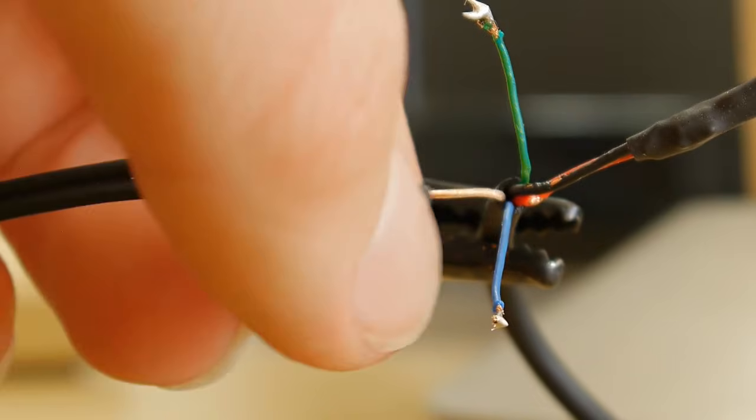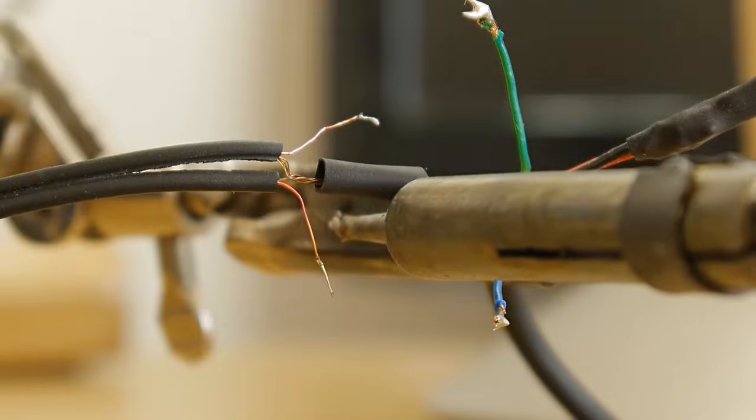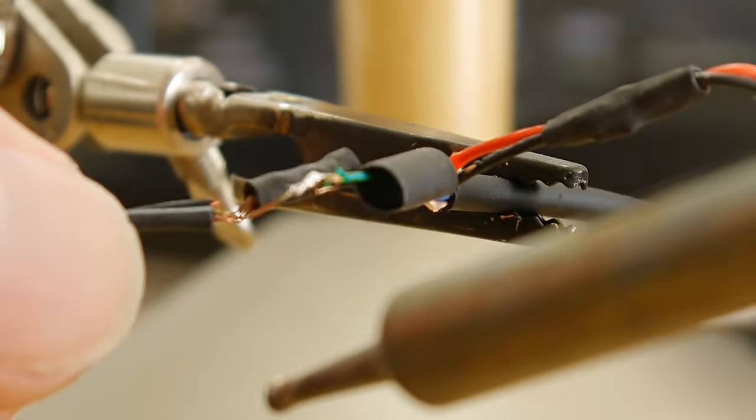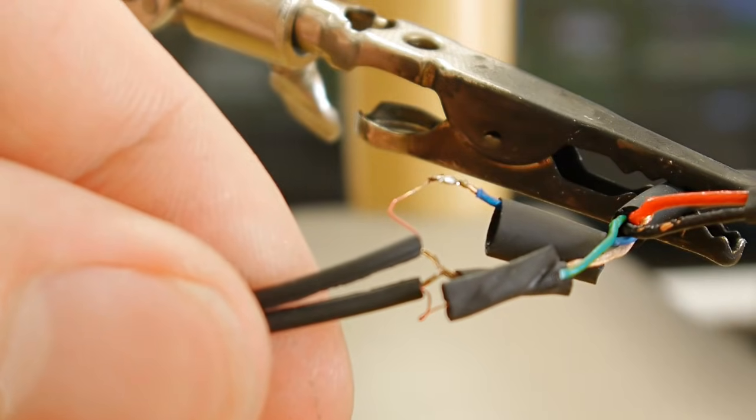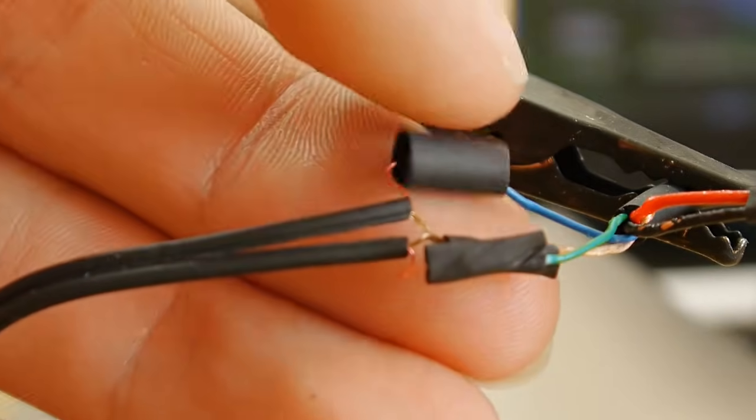Solder the jack's ground wire to the input cable's golden wire as I'm doing here. The green wire is for the left speaker and the blue wire is for the right speaker. So solder your headphone cable's wires accordingly. Don't forget the heat shrink.